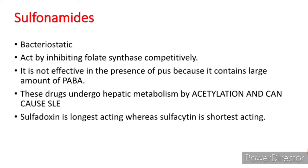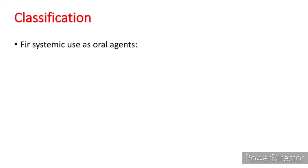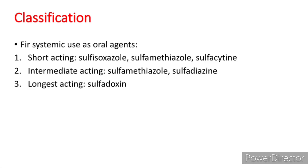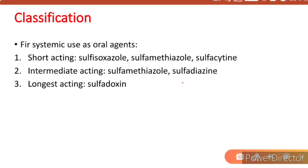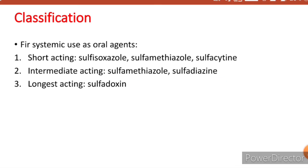Sulfadoxine is the longest acting whereas sulfacetin is the shortest acting. Classification is divided into three based upon duration of action: short acting, intermediate acting, and longest acting. Short acting includes sulfisoxazole, sulfamethiazole, and sulfacetin. Intermediate acting are sulfamethiazole and sulfadiazine. Longest acting is sulfadoxine.